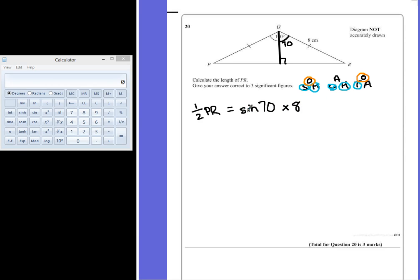Before I even put this into the calculator, we might as well work out what the total length of the line is here, by doubling everything. So we are going to do 2 times the sine of 70 multiplied by 8.